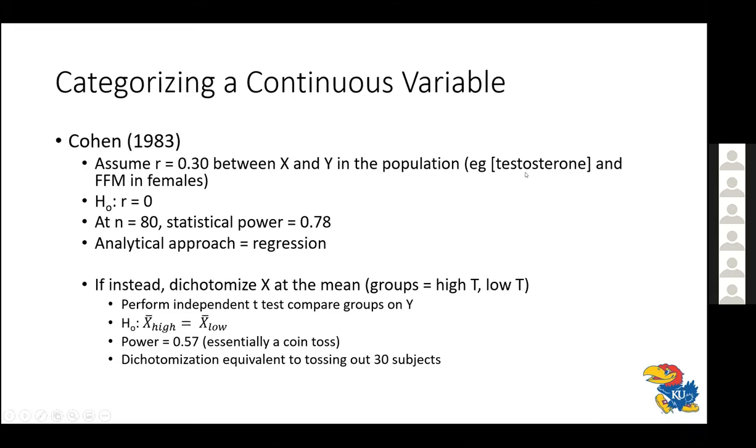So if we follow a null hypothesis paradigm here, the correlation that we're testing for the null hypothesis is that the correlation is 0. And as it turns out, if the population value is 0.30, if you have 80 subjects in your analysis, you have a statistical power 0.78 to detect a correlation that's not zero. And if you treat the data as continuous as testosterone concentration would be, as well as fat-free mass, the analytical approach would be some sort of regression model. But what if instead you split the testosterone scores into high and low? So you just went right at the mean of the sample. And so another approach then, you could take an independent t-test and compare the groups on fat-free mass. So we have half the sample is now categorized as high testosterone, half the sample is categorized as low testosterone. And if you were to do a power analysis, what you would find is that you've gone from a power of roughly 0.8 down to a power of 0.57. So you essentially boiled your analysis down to a coin toss in terms of your ability to detect difference. And if you convert that into a sample size, that's the equivalent of throwing 30 subjects out of your sample. So one of the great sins of statistical analysis is to throw away statistical power. And dichotomizing continuous variables does that.